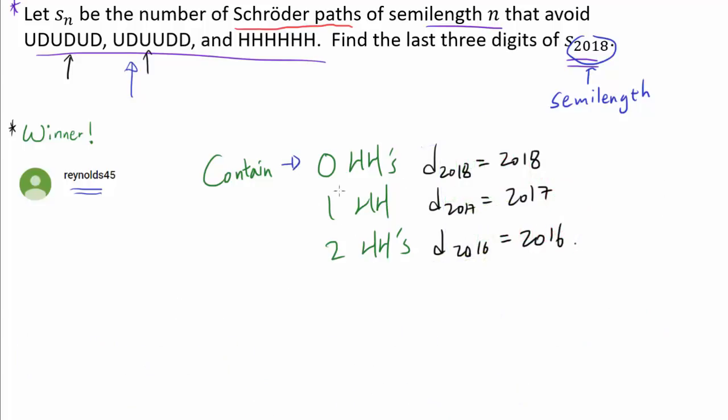So let's start the case work. The number of Schröder paths with zero HHs such that the Dyck path avoids these two patterns, well, that's 2018. We know that.